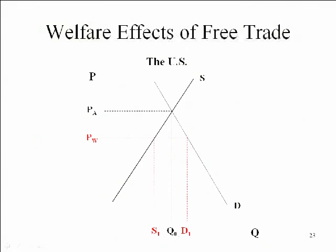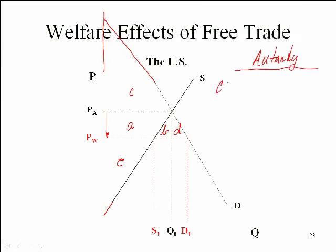In the US, we know the price fell. Let's think about what consumer surplus and producer surplus were before free trade and after free trade. I'm going to label some areas: A, B, C, D, and E. These are just various areas that identify the triangles and other geometric shapes we have in this diagram. What we want to ask ourselves, then, is what was consumer surplus in autarky?